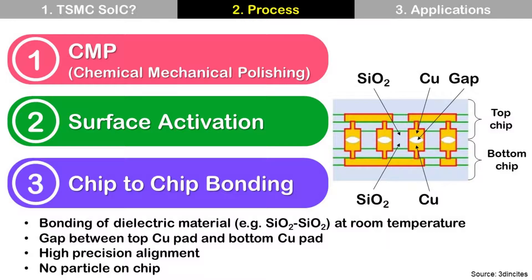Step 3: Chip-to-chip bonding. This process bonds the dielectric material — for example, silicon dioxide to silicon dioxide — between the top and bottom chip at room temperature. This bonding is covalent bonding, and there is a gap between the top copper pad and the bottom copper pad. It requires high-precision alignment because the bond pitch is very narrow, like 10 micrometers, and there is no self-alignment as with solder bumps. Also, the chip surface must not have any particles that could cause bonding problems; since wafer sawing creates debris, removing all particles is very challenging.